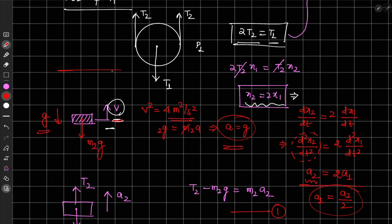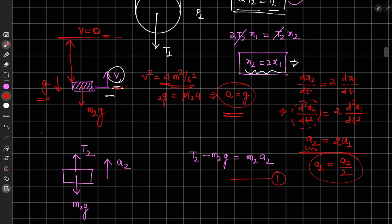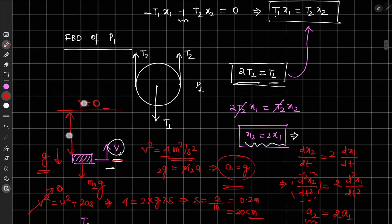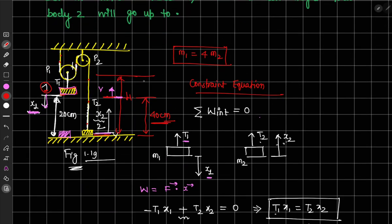After body 1 hits the ground, body 2 has initial velocity 2 m/s upward with deceleration g downward. Using V² = U² + 2AS with final velocity 0: 0 = 4 − 2·g·S, so S = 4/(2×10) = 0.2 m = 20 cm. Body 2 already rose 40 cm while body 1 was falling, and rises an additional 20 cm due to its velocity. Therefore, the total maximum height body 2 reaches is 40 + 20 = 60 cm.